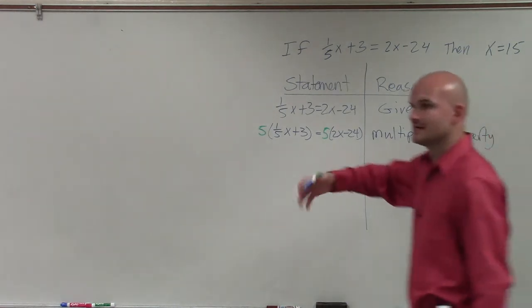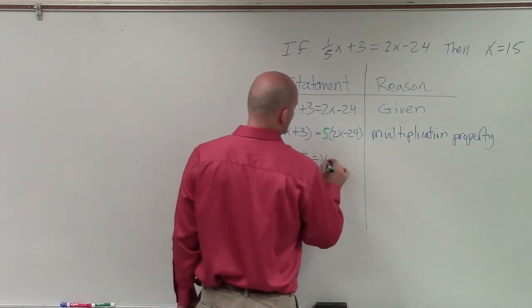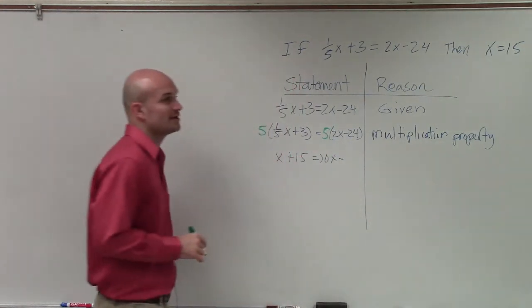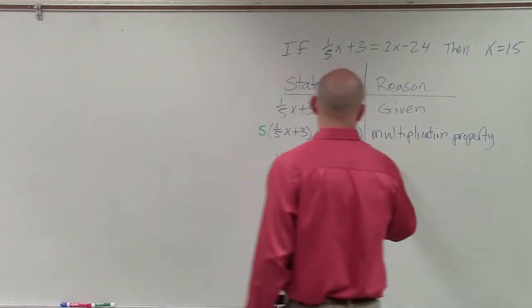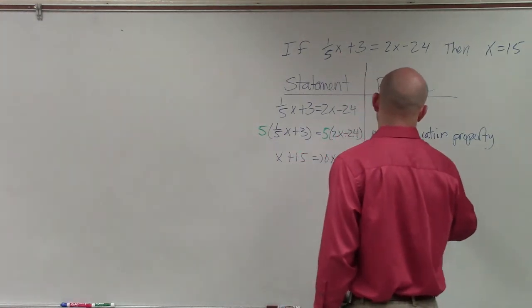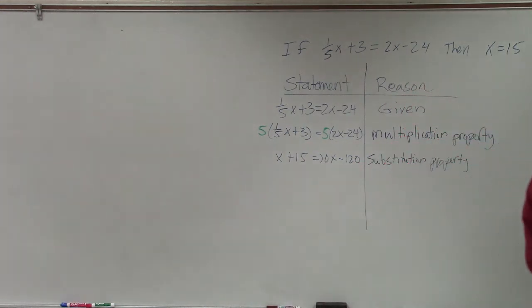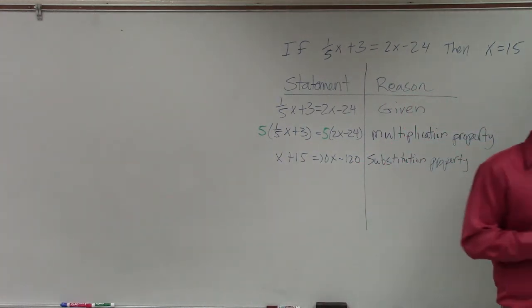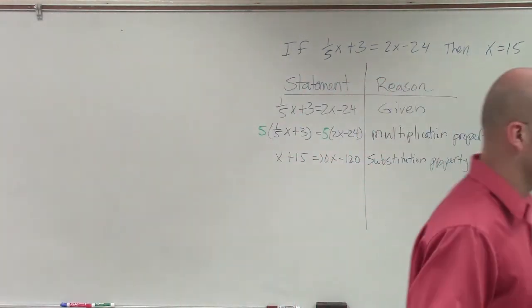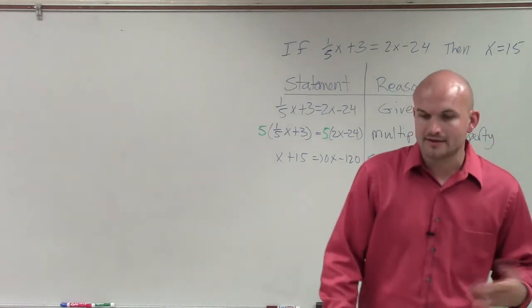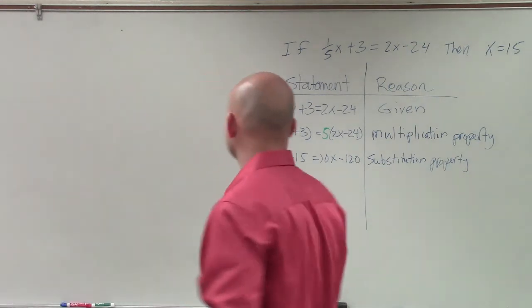So then you multiply on both sides. And then what we can do is simplify this into x plus 15 equals 10x minus 5 times 24, which would be 120. So the next property is once we evaluate that, do our math, when I multiply that 5 across there, that's going to become my substitution property, because we have our equations are equal to each other on both sides.